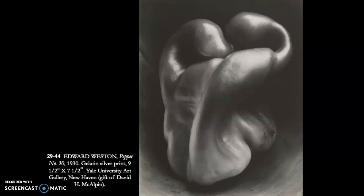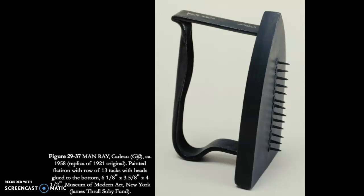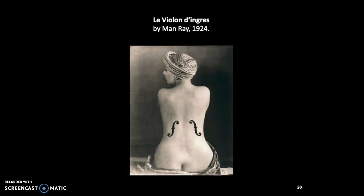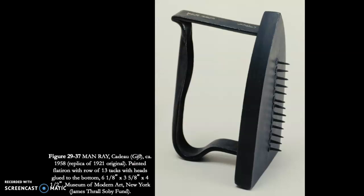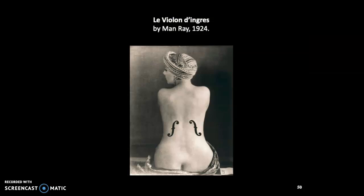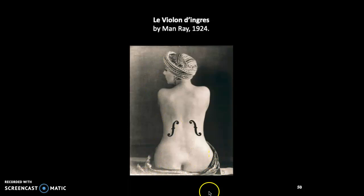Man Ray was French but moved to America, making him a bridge between two continents — one reason American art improved was due to artists fleeing war-torn Europe. He made the famous Le Violon d'Ingres, taking the odalisque form and adding violin f-holes onto the back. He was heavily influenced by Dada readymades, and you can see Orientalist elements in the head covering and the draped fabric. He's nodding to earlier artists but adding frets so she can be played like a violin.